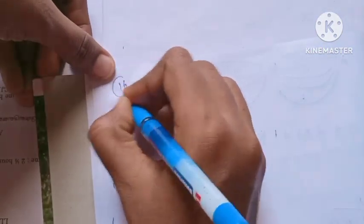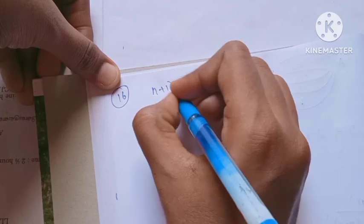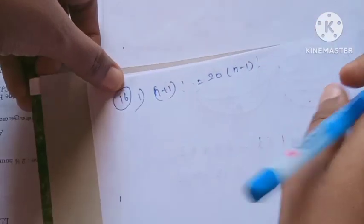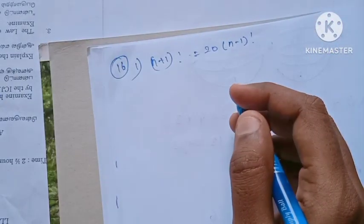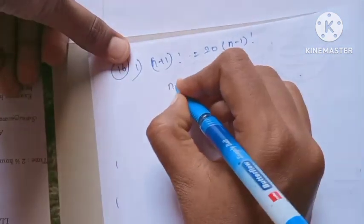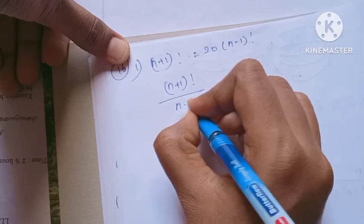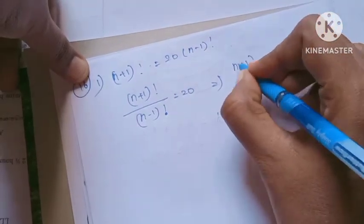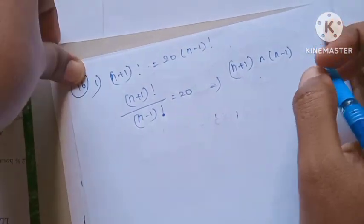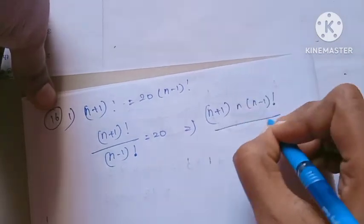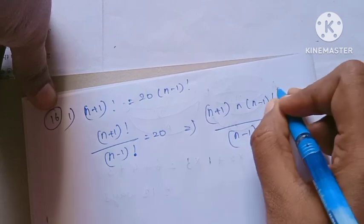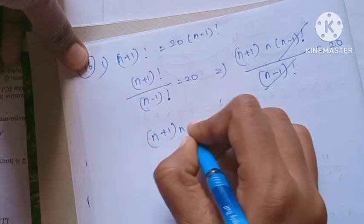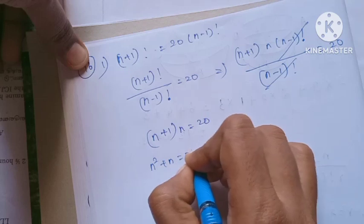So if you look at it, (n+1)! is equal to 20 into (n-1)!. So we can write (n+1)! is equal to 20 into (n-1)!.